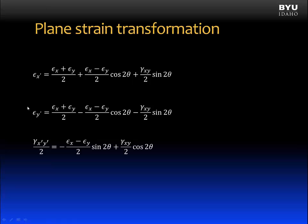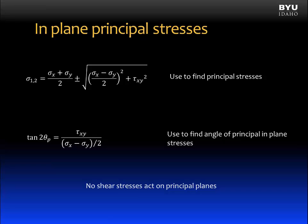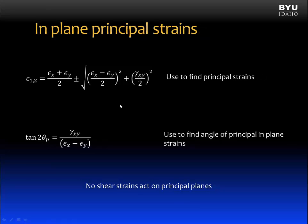The equations are very similar. Just as we had in-plane principal stresses and equations for finding the in-plane principal stresses and the rotation angle to find those stresses, we also have in-plane principal strains. The equations are very similar again, replacing sigma x and sigma y with epsilon x and epsilon y, and replacing tau xy with gamma xy divided by two.